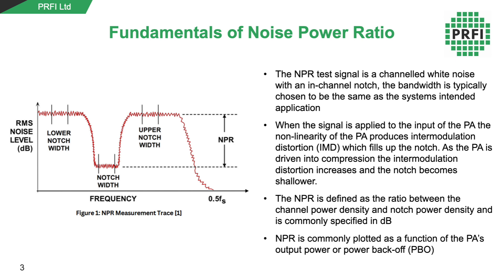When the device under test is operating at low input power levels, the difference between the notch power and the channel power is high, and this results in a good NPR figure. As the input power is increased, the notch power increases more quickly than the channel power, and the noise power ratio reduces.